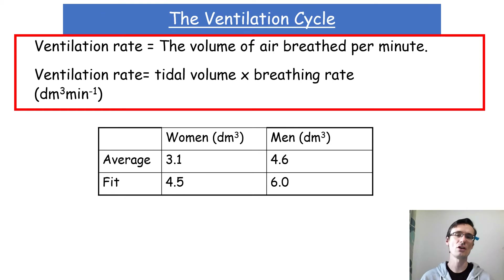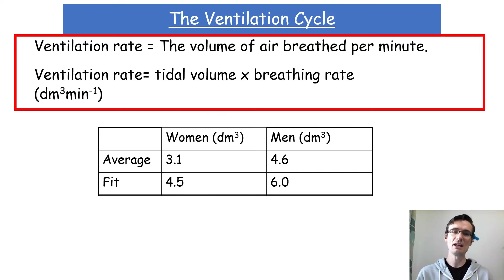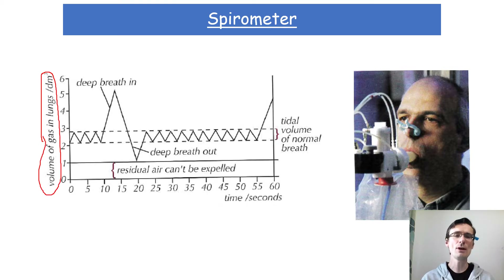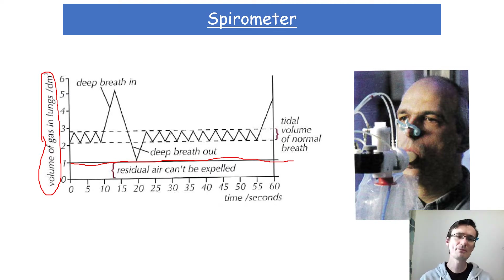For example, 0.4 decimetres cubed times 15 breaths per minute. Average figures differ by sex and fitness: average female is 3.1, average male is 4.6, fit females 4.5, and fit males 6.0. A spirometer trace shows these measurements — the spirometer measures the volume of gas in our lungs. There's always a residual volume at the bottom that we can't expel, so the lungs never completely empty. As you breathe in the volume goes up, and as you breathe out it goes down — that's your tidal volume.